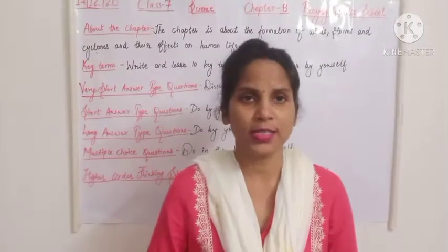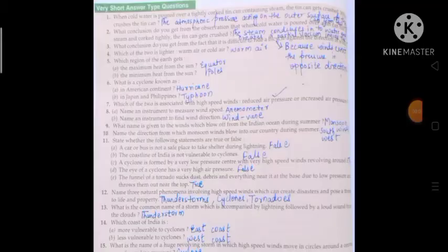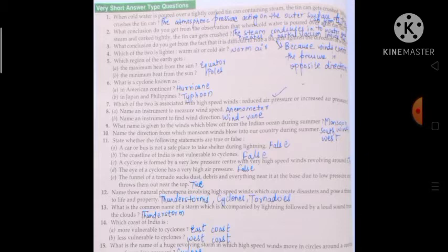Let's start with very short answer type questions. Question number one: when cold water is poured over a tightly corked tin can containing steam, the tin can gets crushed. What crushes the tin can? The answer is the atmospheric pressure. Atmospheric pressure is acting on the outer surface of the can from all the sides.